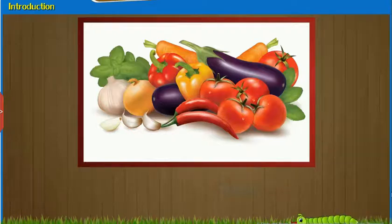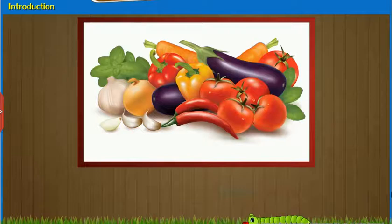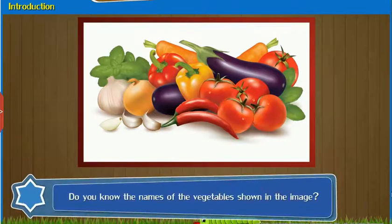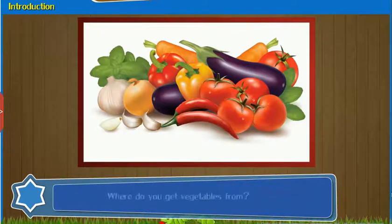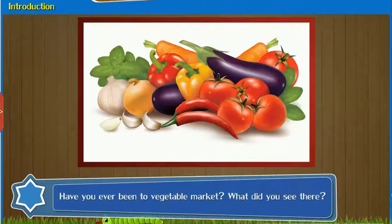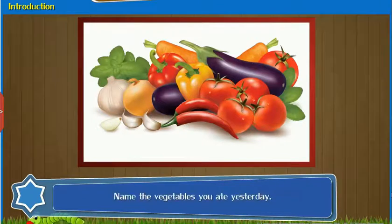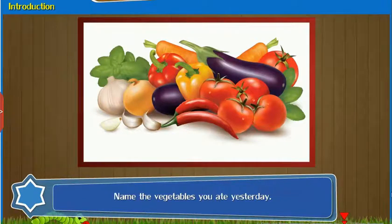Introduction: Observe the given image and answer the questions that follow. Do you know the names of the vegetables shown in the image? Where do you get vegetables from? Have you ever been to a vegetable market? What did you see there? Name the vegetables you ate yesterday. Let us now learn about vegetables.